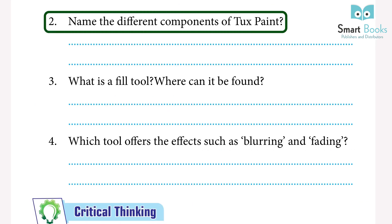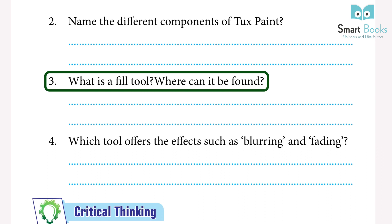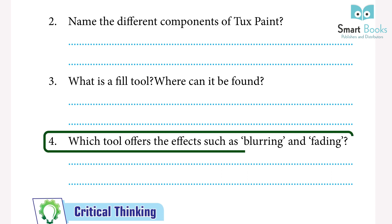2. Name the different components of Tux Paint. Answer: Canvas, Drawing Area, Color Palette, Selection Tool, Drawing Tools. 3. What is the Fill Tool? Where can it be found? Answer: This tool fills the picture with a color and is found in the magic effects option. 4. Which tool offers effects such as blurring and fading? Answer: The Magic Tool offers a variety of unique effects such as blurring and fading for drawing.